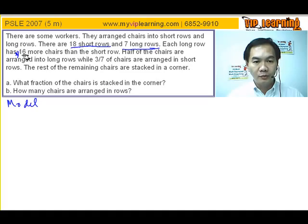Additional clues here saying 1 long row is 16 more than 1 short row. So 1 long equals 16 plus 1 short. Leave it as it is.